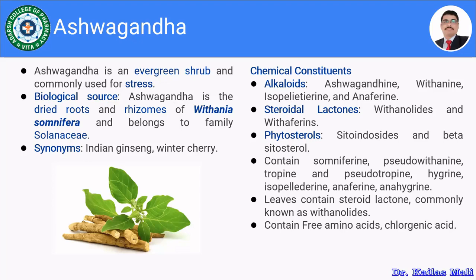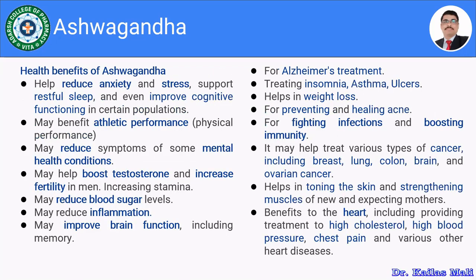Furthermore, it contains somniferine, pseudowithanine, tropine and pseudotropine, along with hygrine, isopelletierine, anaferine, and anahygrine. The leaves of Withania contain steroidal lactones commonly known as withanolides. It also contains free amino acids and chlorogenic acids. These are the chemical constituents of Ashwagandha.